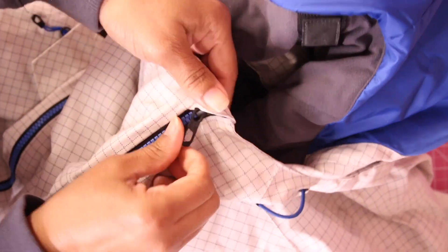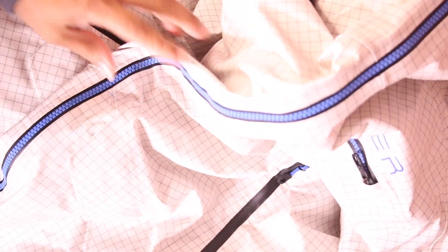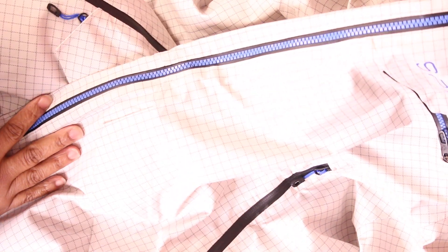That is how you replace your broken slider on a double slider or two-way zipper. I hope this tutorial was helpful for you. If you have any questions, leave them in the comments below. Otherwise, I thank you for watching and I hope you guys have a top-notch evening. Until next time, goodbye for now.